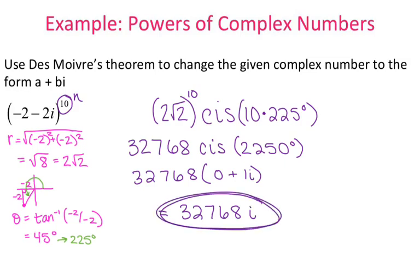When evaluating the trig parts — cosine of 2250 and sine of 2250 — you're just plugging those into your calculator. Just make sure your calculator is in degree mode. So that's De Moivre's Theorem: start by finding r, then find theta, then use n — your exponent — to work through the formula.